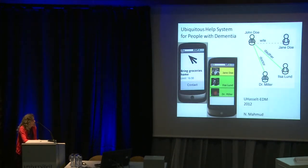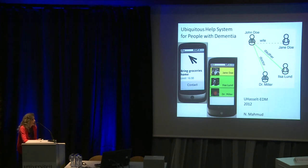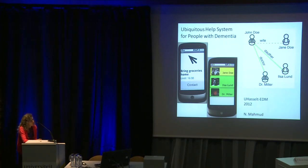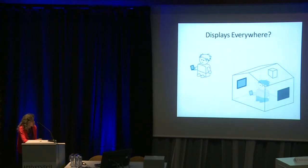Another example from our own research involves the social network in a care domain application: a ubiquitous hub system for people with dementia. The idea is that at a certain moment in time, you want to reach a person who is suitable to provide the help required. You can have an overview of the social network of the person, know which person is available or not, and address the question for help to the right person. We expect to see many more applications of social networking across all kinds of application domains.